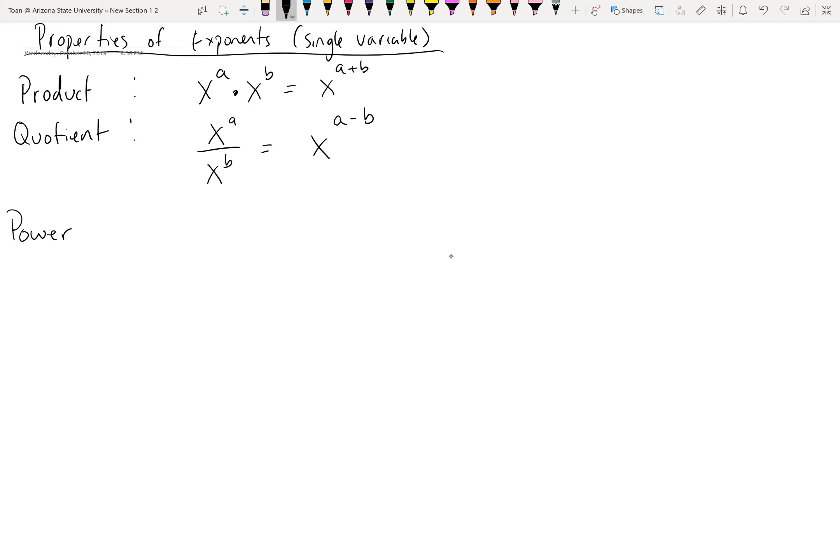The power property of exponents talks about what happens when you mix exponents together, in other words when you stack exponents. The rule says if there's an exponent outside of a set of parentheses, you multiply to all the inside exponents. So you multiply the exponents when they're stacked on top of each other.